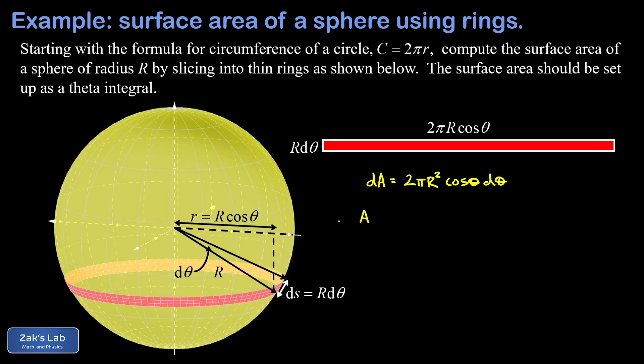The entire area is just the sum of all the area contributions. This is what an integral does - it adds up a bunch of continuously changing infinitesimal quantities. We have the integral of two pi R squared cosine theta d theta, and then we have to put in the limits of integration.